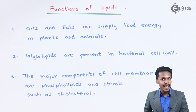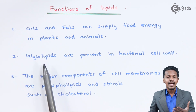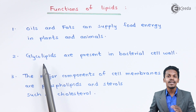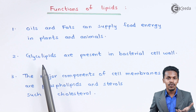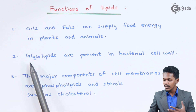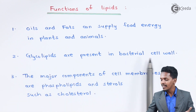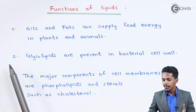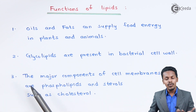The next one is glycolipids. Glycolipids are the combination of lipids and sugar molecules — for example glucose. Glycolipids are present in the bacterial cell membrane. This is the main function of glycolipids.